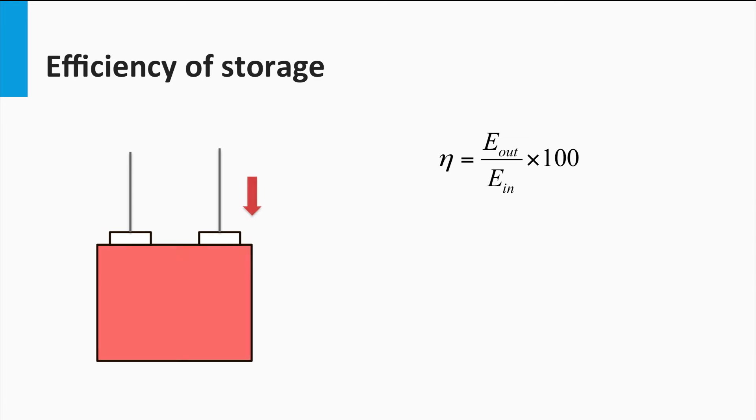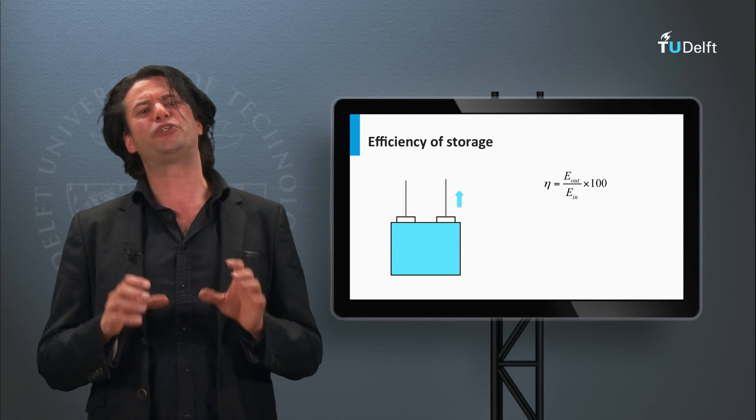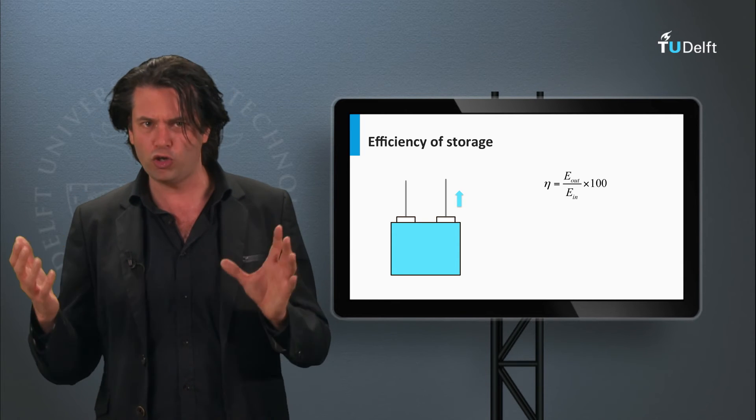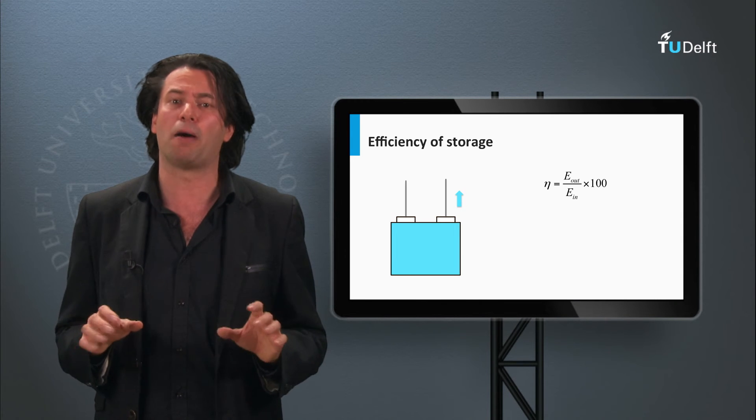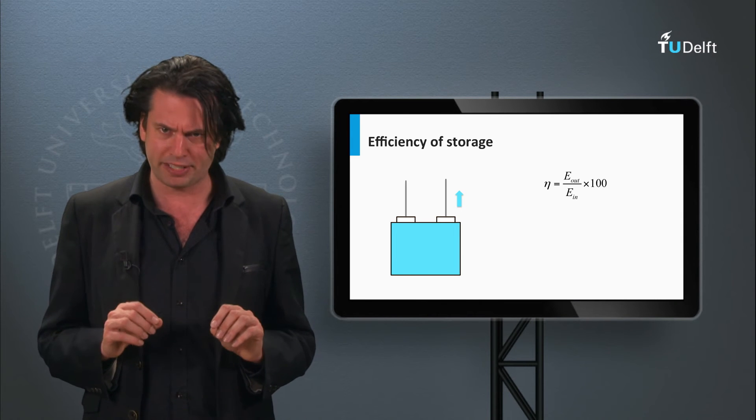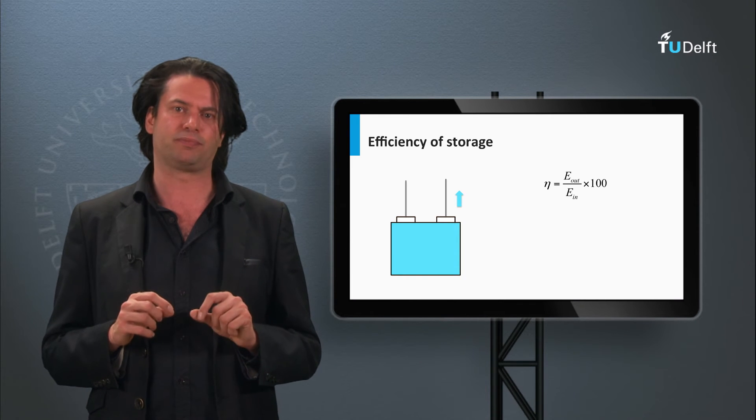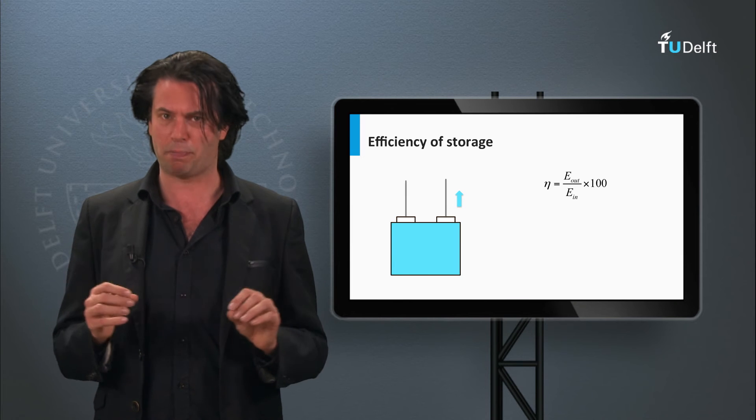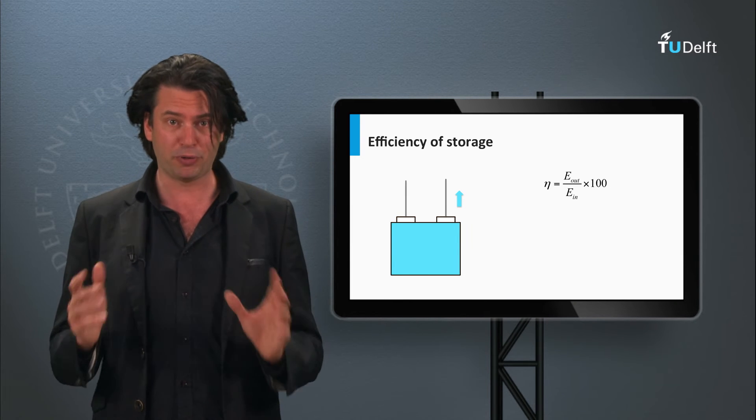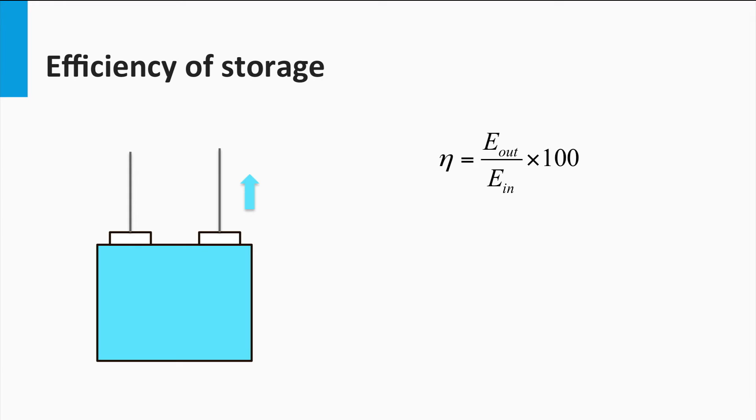Like every other component in the PV system, the efficiency of the storage system is also of high importance. In the last video you saw how we selected battery from a host of other storage choices. We said that the batteries, apart from the ease of implementation, offer some of the highest efficiencies. Usually for storage technologies we talk about round-trip efficiencies.